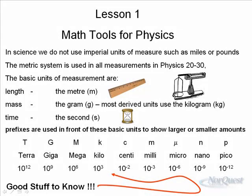On the diploma exam in physics 30 they do give you a sheet that has all of these prefixes on it and explains a little bit about what they mean. So you don't need to memorize it but you really should be familiar with most of it.